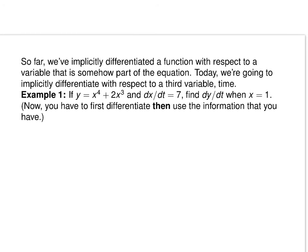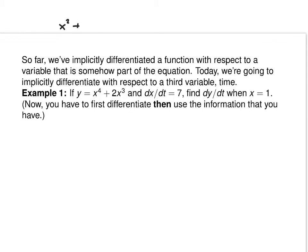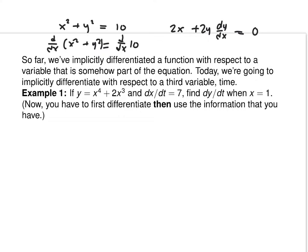So far, when we did implicit differentiation, if we had x squared plus y squared equals 10, we took the derivative of both sides. We said 2x plus 2y dy/dx equals 0. We didn't add anything with that x term because that would have been dx/dx, and dx/dx is 1. What we're going to do today is differentiate a function with respect to a variable that isn't there — we're going to differentiate with respect to time. So we take d/dt of y equals d/dt of x squared plus 2x cubed. Now you'll have dx/dt's in there. It's the same as implicit differentiation except now you need one of those every single time.